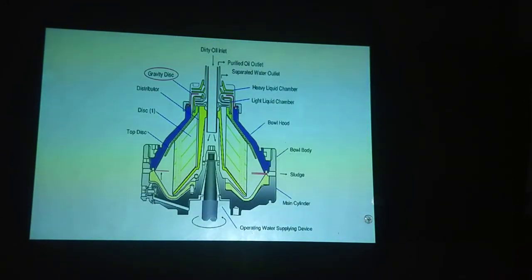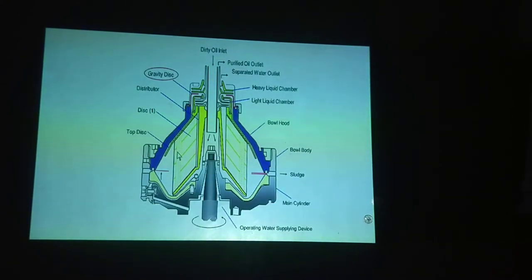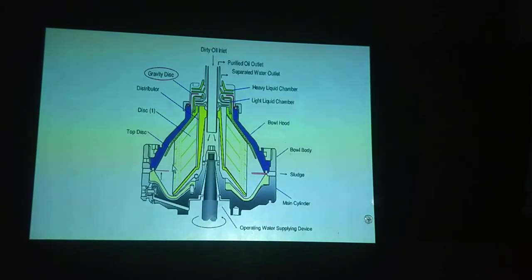All the parts I am going to explain. First is the gravity disc. This is the gravity disc. Basically, the function of the gravity disc is to create the interface line. This interface line is a line which separates the oil and the water. This is dependent on the gravity disc.